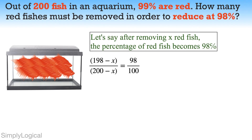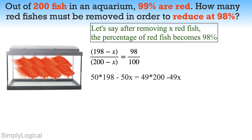After simplification, the equation becomes 50 times (198 minus x) equals 49 times (200 minus x). So, x equals 9900 minus 9800, which equals 100. Now x equals 100.